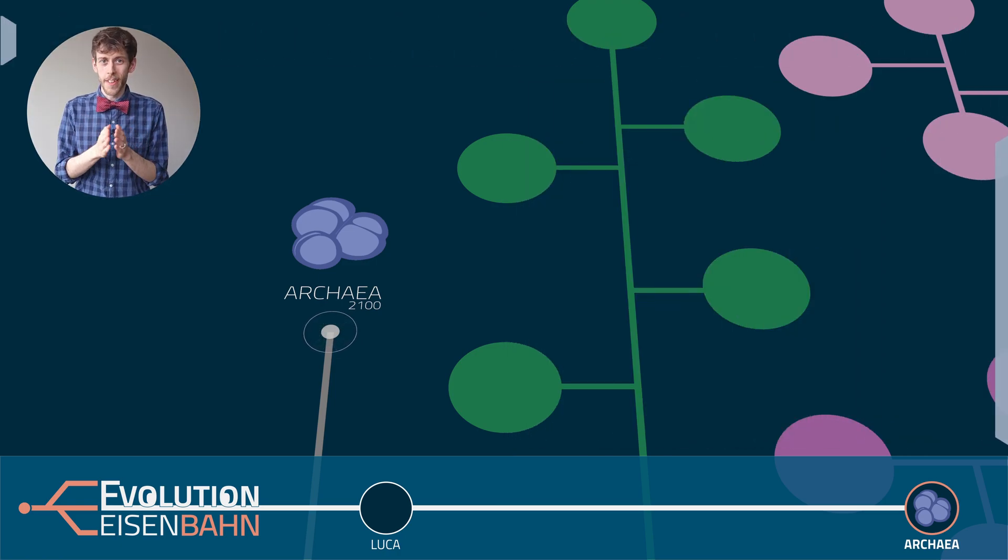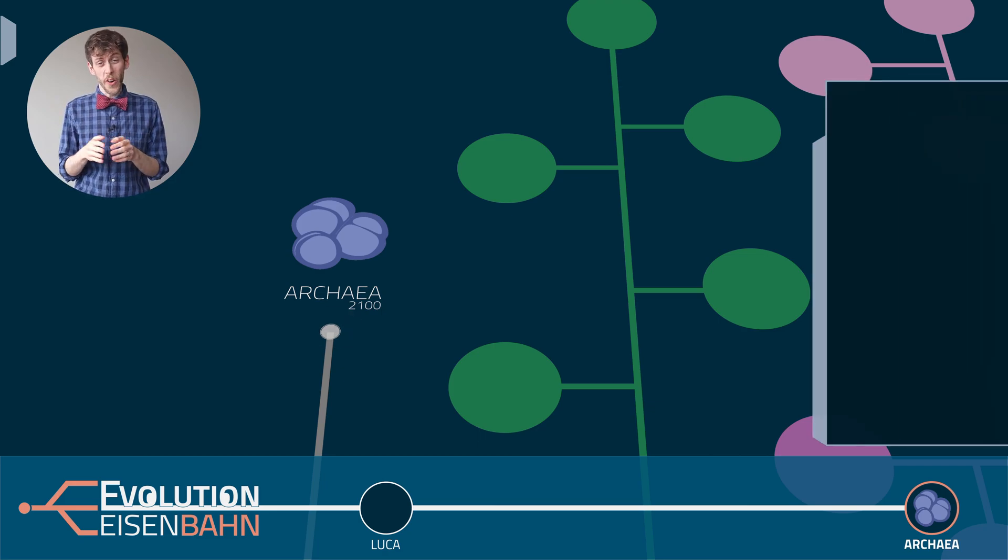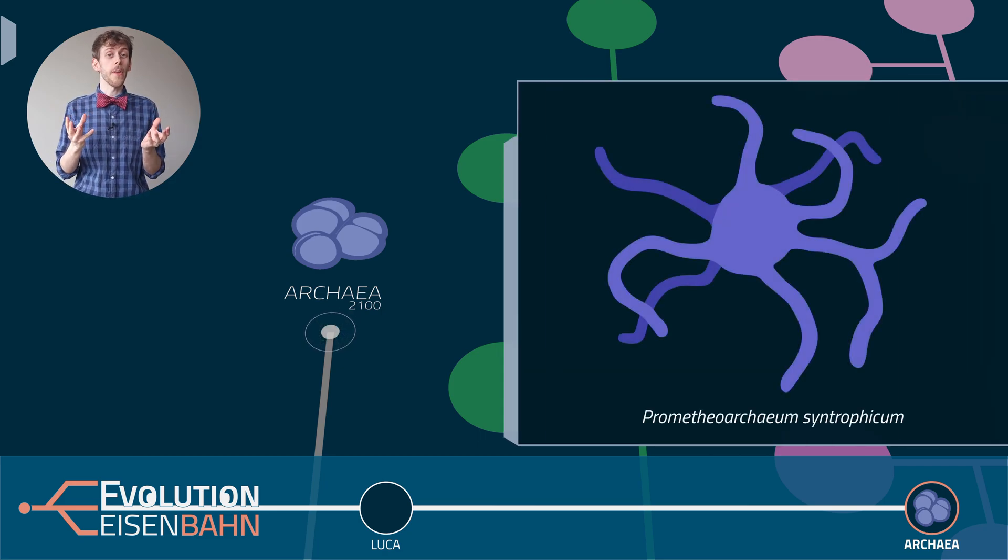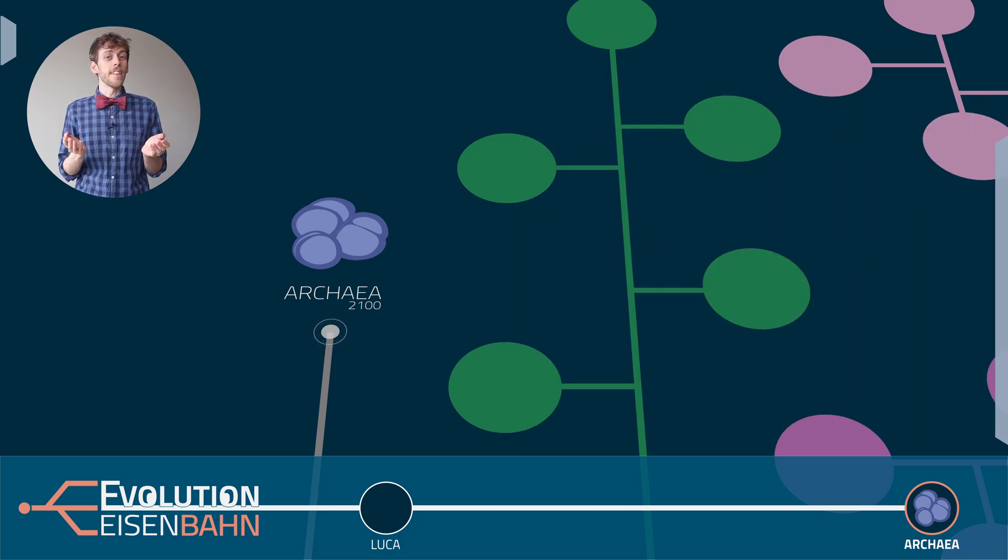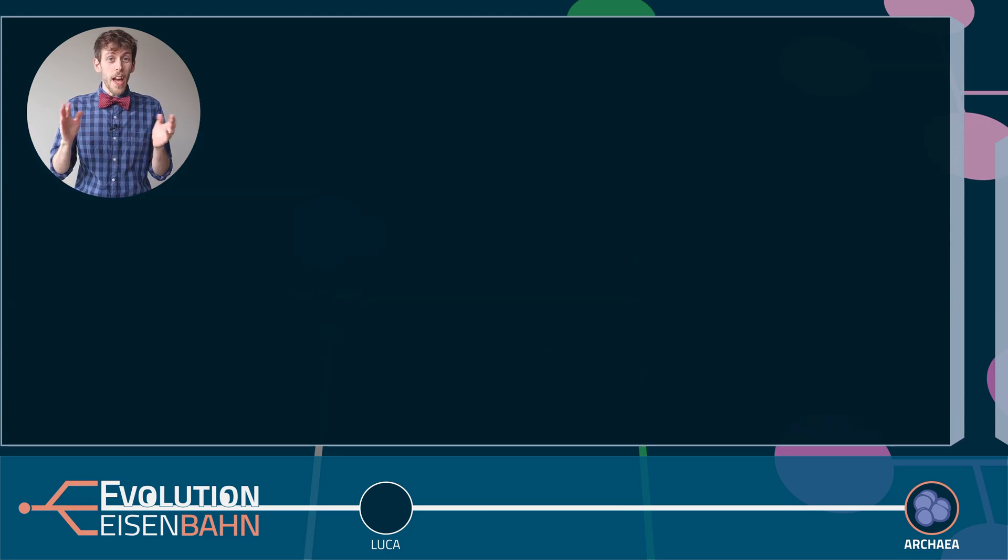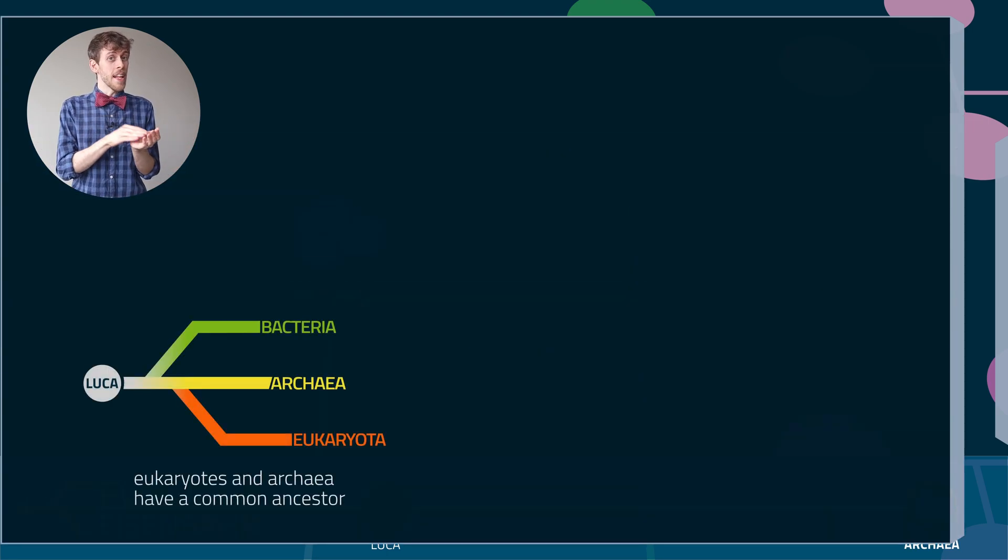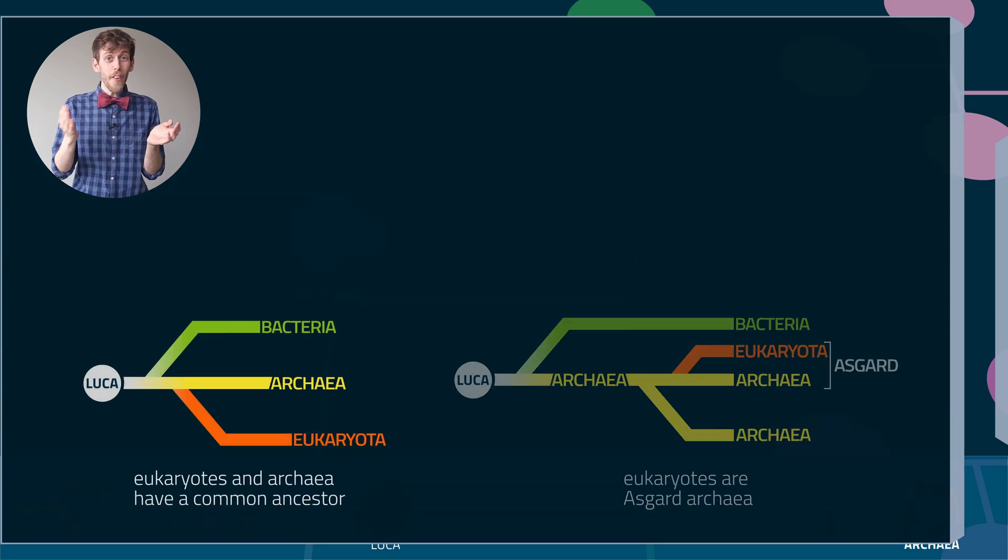But now comes the kicker. These Asgard archaea show some eukaryote traits. For example, they can change their shape. That's something no bacterium can do. And indeed genetic analyses show that the eukaryotes seem to be most closely related to Asgard archaea specifically. It's still early. But do you realize what this means if it is true? Eukaryotes don't just have a common ancestor with archaea. They are archaea. We are archaea.